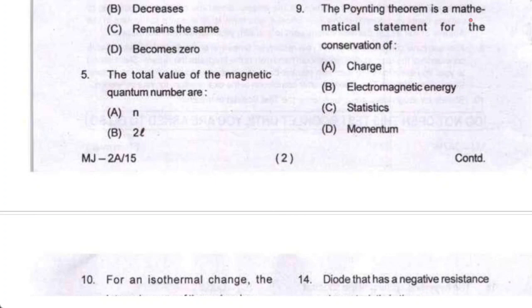Question number eight is a mathematical statement for the conservation of electromagnetic energy — this is the Poynting theorem. So option B is your correct option.